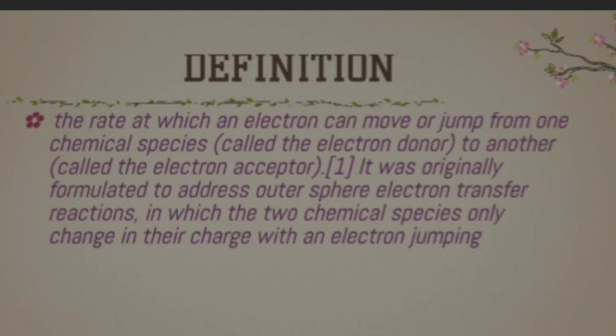Marcus Theory was originally formulated to address outer sphere electron transfer reactions, in which the two chemical species only change in their charge with an electron jumping between them — there is no bond breaking. In outer sphere electron transfer, the charges change due to the transfer of the electron, and Marcus Theory is primarily used to study these outer sphere electron transfer reactions between donor and acceptor.